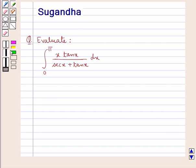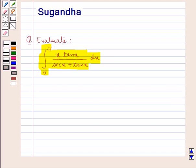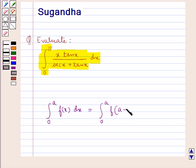Hello and welcome to the session. In this session we discuss the following question which says: evaluate the integral from 0 to π of x tan x divided by sec x plus tan x dx. Before moving on to the solution, let's recall one property of definite integrals which says that the integral from 0 to a of f(x) dx is equal to the integral from 0 to a of f(a minus x) dx. This is the key idea that we use in this question.